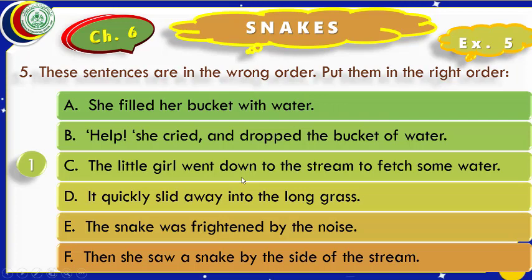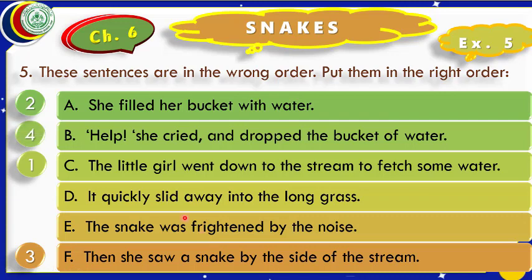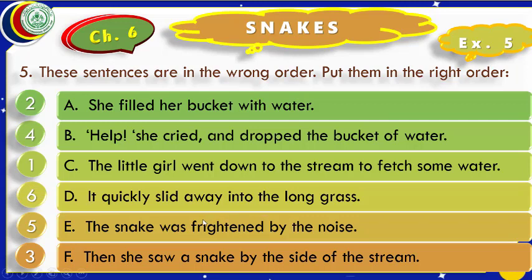The first sentence: 'The little girl went down to the stream.' Second: 'She filled her bucket with water.' Third: 'Then she saw a snake by the side of the stream.' Fourth: 'She cried help and dropped the bucket of water.' Fifth: 'The snake was frightened by the noise.' Sixth: 'It quickly slid away into the long grass.' If we arrange the sentences in this sequence, they will make a story.